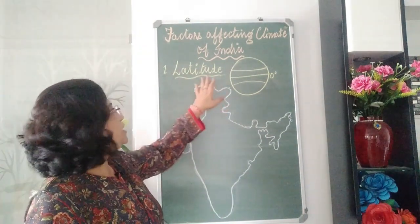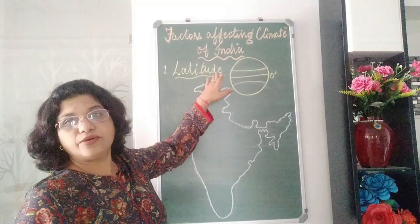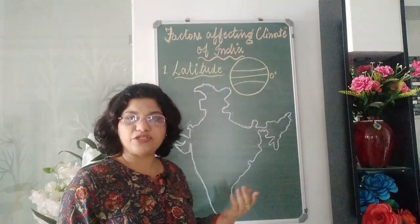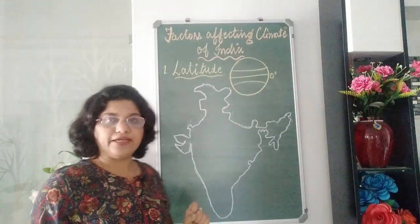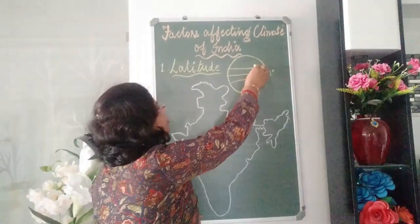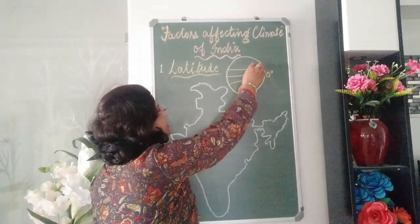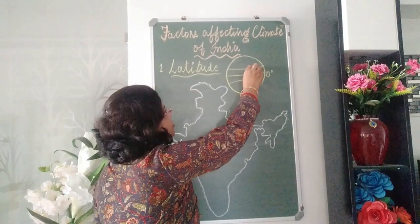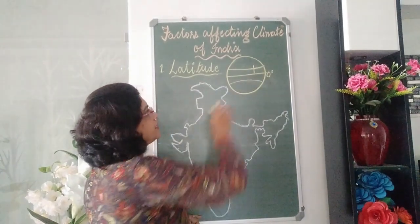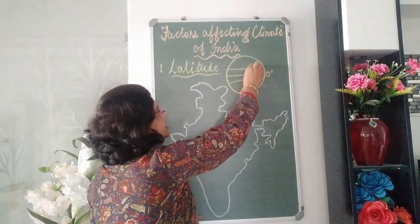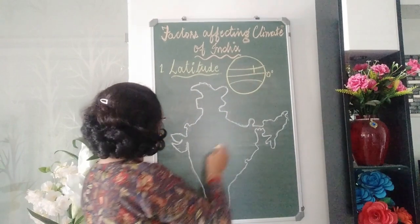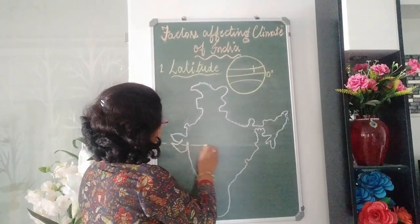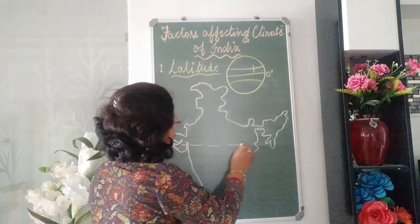We need to know where India is located latitudinally to understand the temperature of India. In a globe, India lies in such a position that the Tropic of Cancer passes through the centre of the country.